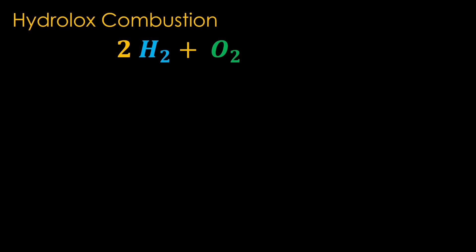To understand mixture ratios, we'll need to spend a little time looking at the chemistry of combustion, and we're going to look at hydrolox engines — those that burn liquid hydrogen and liquid oxygen — because they have the simplest chemistry. If we were in chemistry class, we'd write the combustion reaction as: two hydrogen molecules plus one oxygen molecule gives us two water molecules. It also gives us quite a bit of heat.